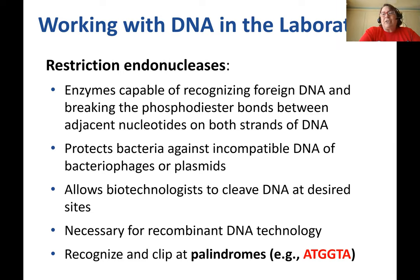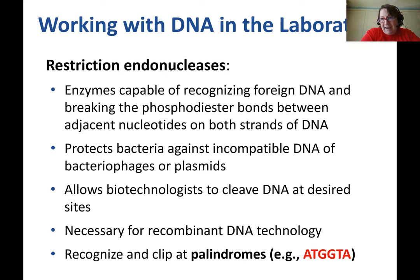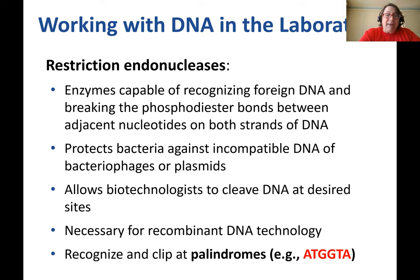Restriction endonucleases are widely used in the laboratory, but virtually every single one was originally pulled out of a bacterium. This is an enzyme capable of recognizing foreign DNA and then breaking that DNA apart — breaking the phosphodiester bonds between adjacent nucleotides on both strands at the site that the restriction endonuclease recognizes. It protects bacteria against incompatible DNA, particularly bacteriophages or plasmids. For laboratory use, it allows biotechnologists to cleave DNA at particular sites, which is incredibly useful if you want to snip a gene out of one thing and stick it into another. It is absolutely necessary for any kind of recombinant DNA.